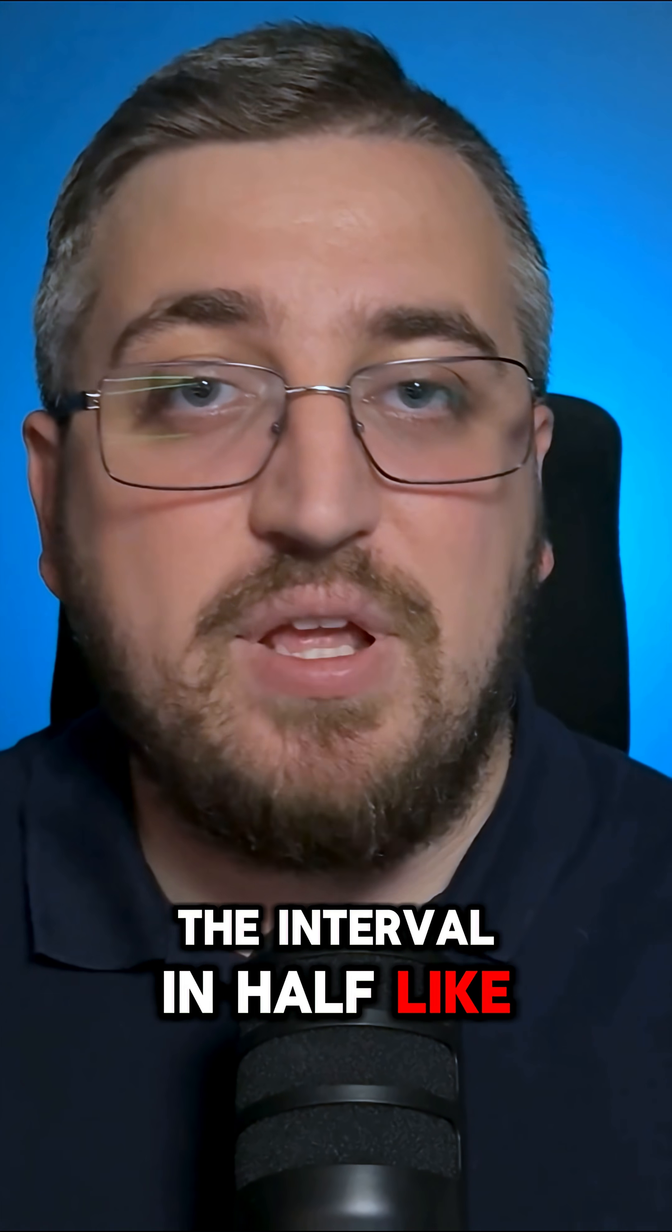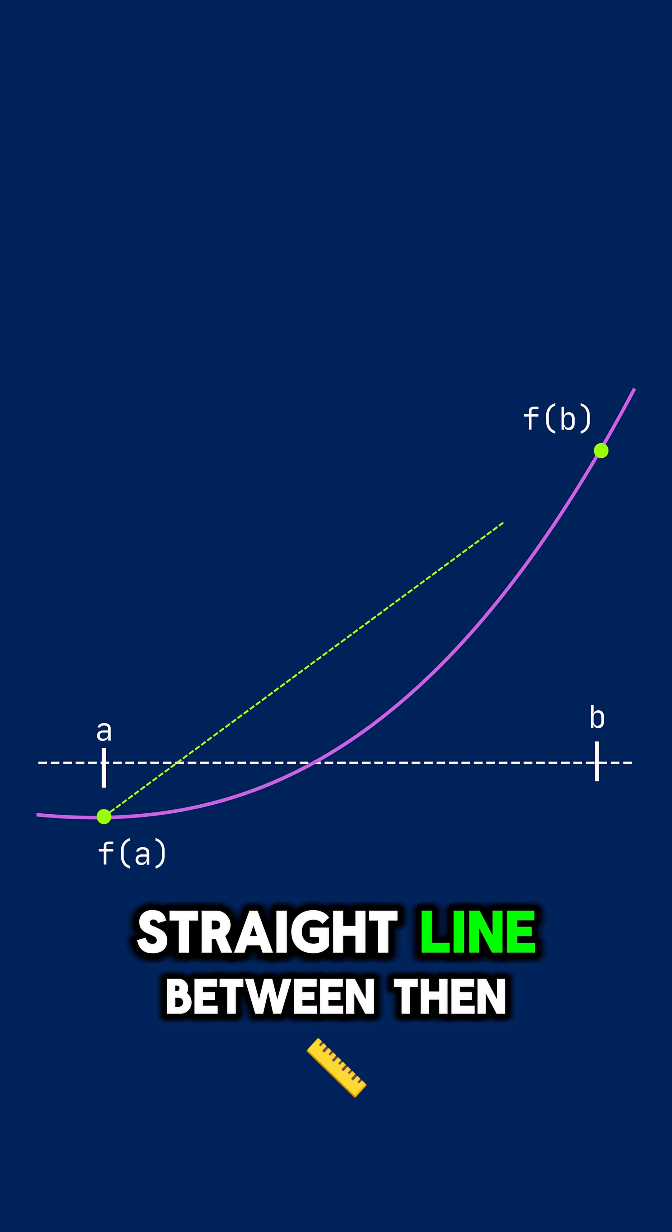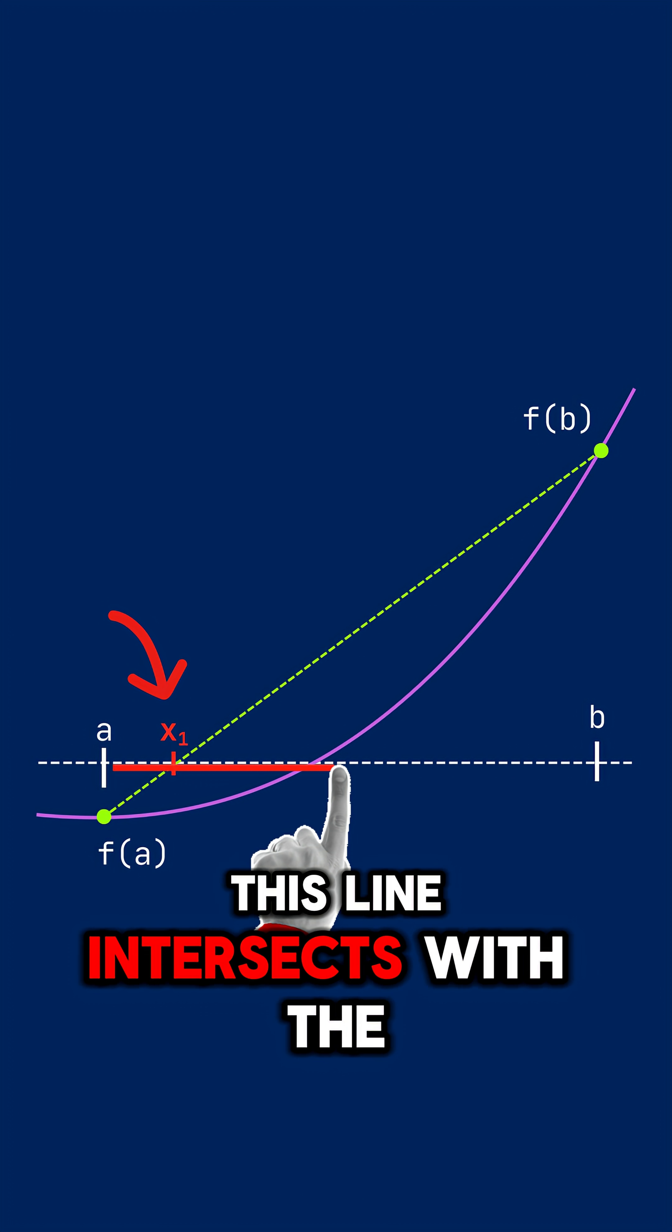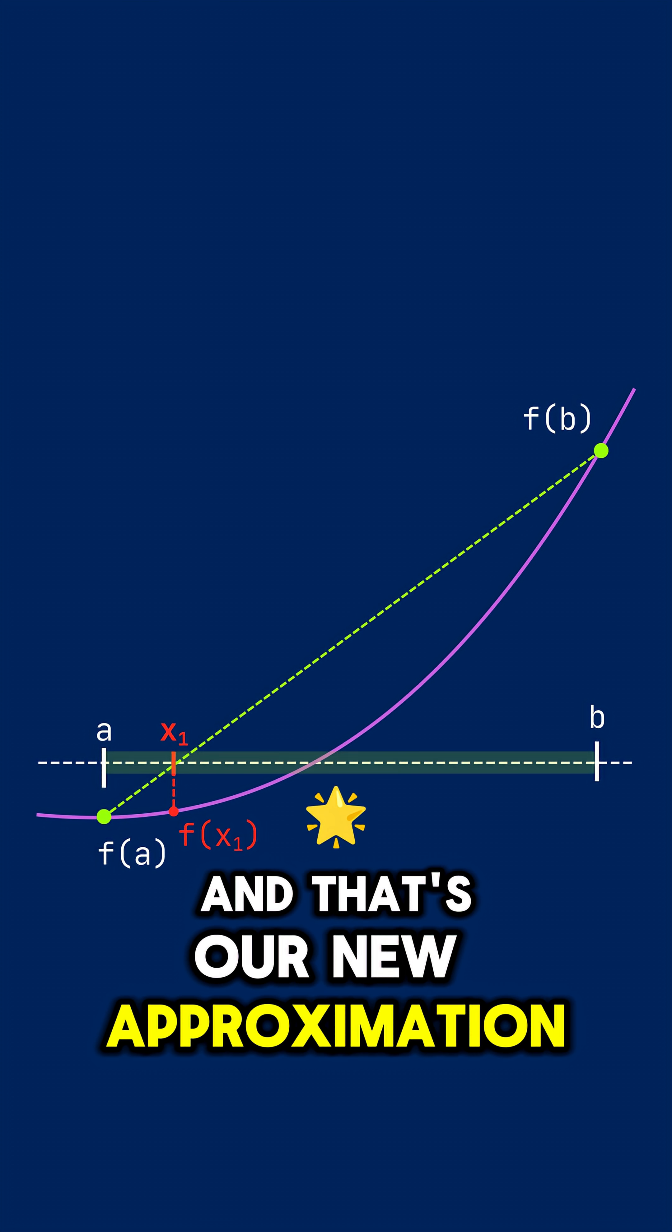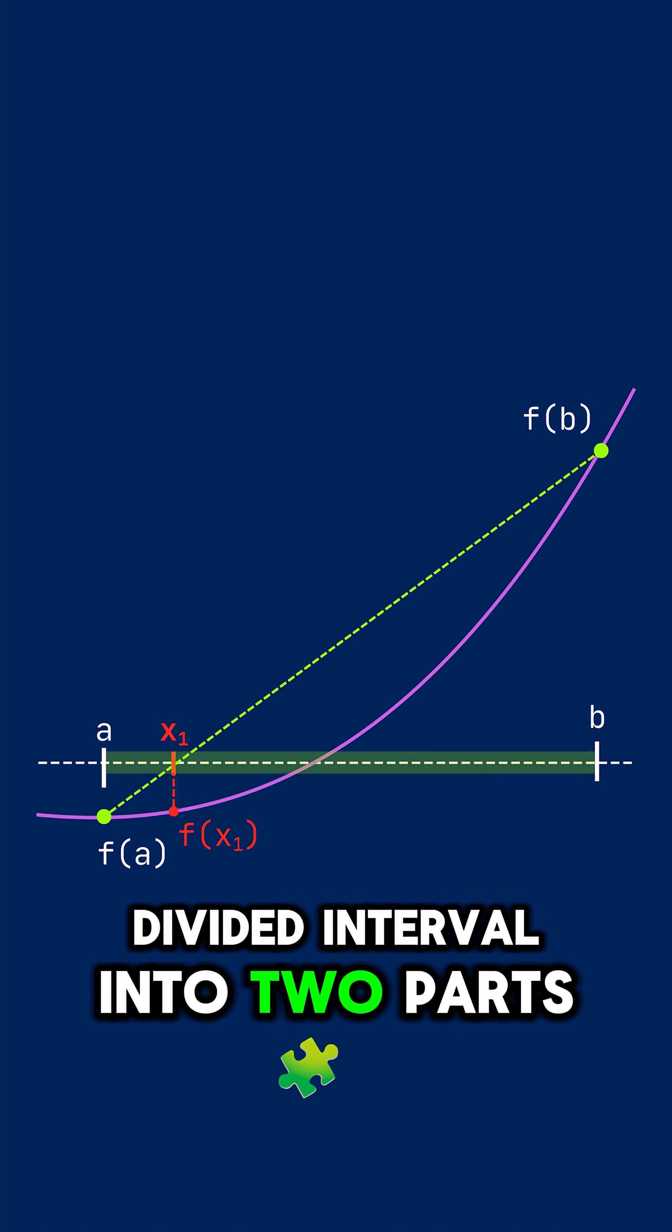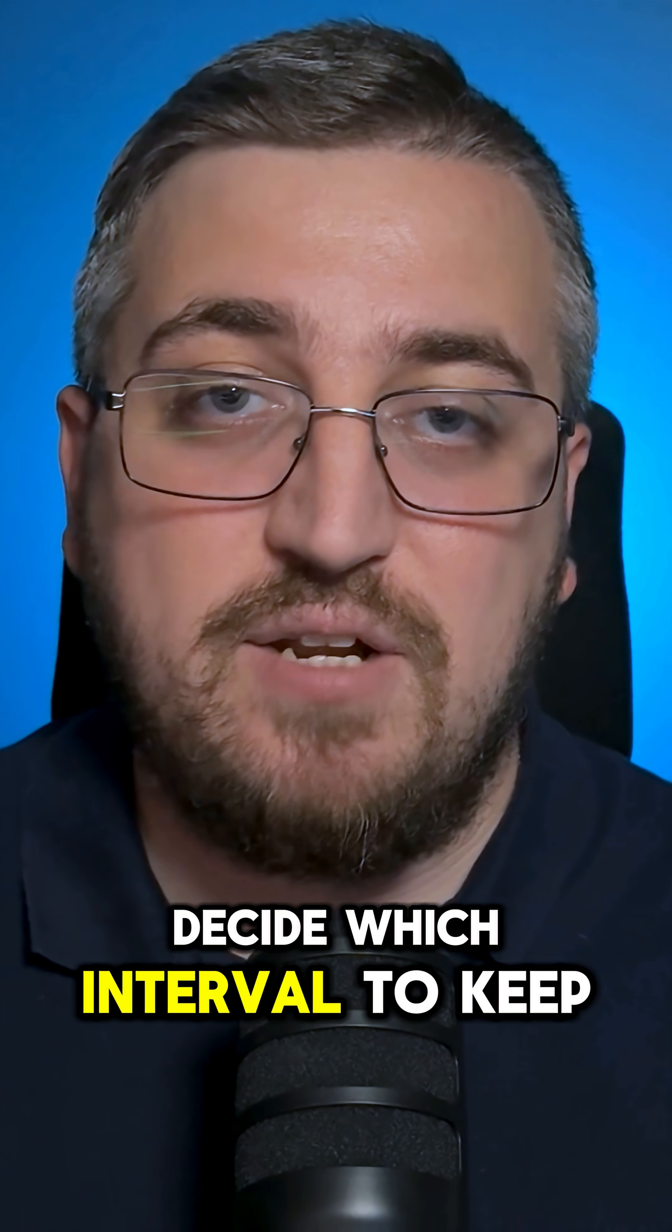Now instead of chopping the interval in half like bisection, false position draws a straight line between the endpoints A and B. Then it finds where this line intersects with the x-axis and that's our new approximation. Now we have divided the interval into two parts and we need to decide which interval to keep.